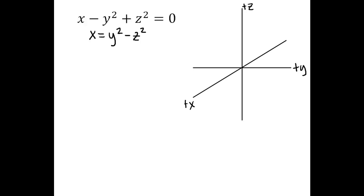We'll notice early that we're going to have a couple of different parabolas here. The x equals y squared portion will be a parabola, and when I have x equals negative z squared, I'll have another parabola. Both are going to open on the x axis, but one will open in the positive x direction and one will open in the negative x direction. So I'm going to start with those two parabolas first.